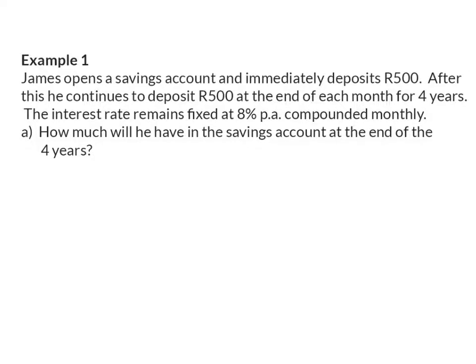Example 1. James opens a savings account and immediately deposits R500. After this, he continues to deposit R500 at the end of each month for 4 years. The interest rate remains fixed at 8% per annum compounded monthly. Our first question, how much will he have in the savings account at the end of 4 years? Here, a timeline will help you to make sense of all the information given.